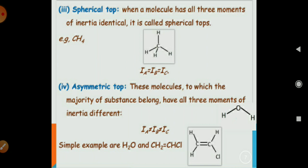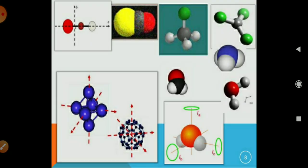The next molecule type is asymmetric top. In this type of asymmetric top, all three moments of inertia are different from each other. Like Ia is not equal to Ib which is not equal to Ic. For example, H2O and CH2=CH-CA. Here are also some examples of molecules.